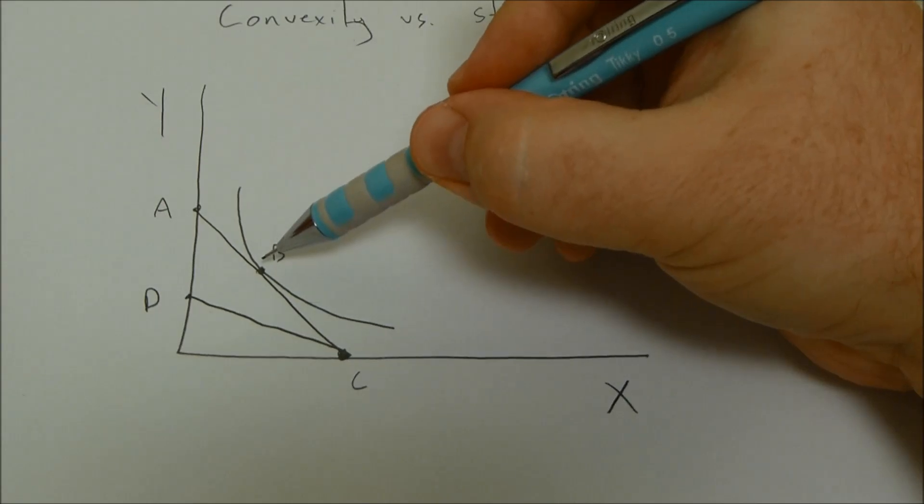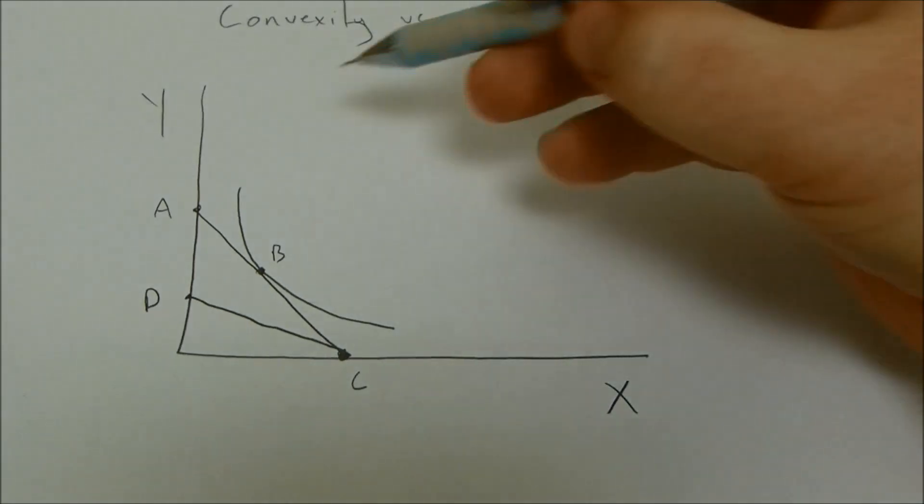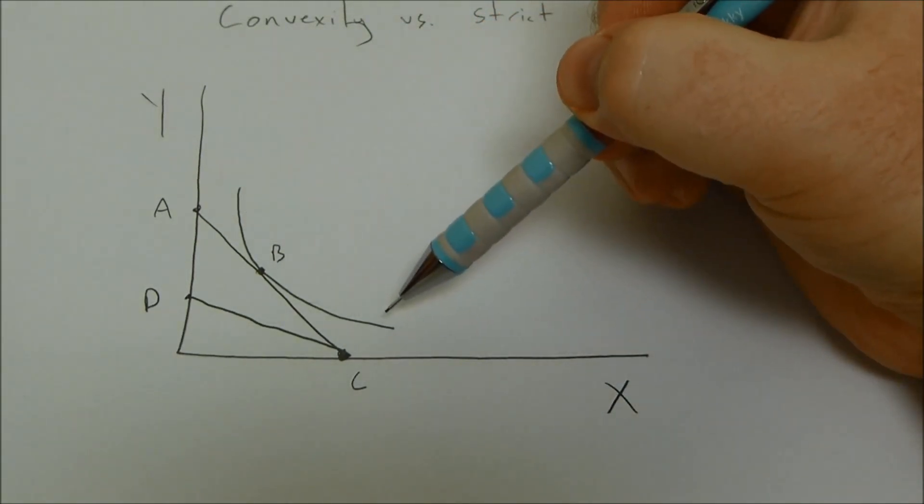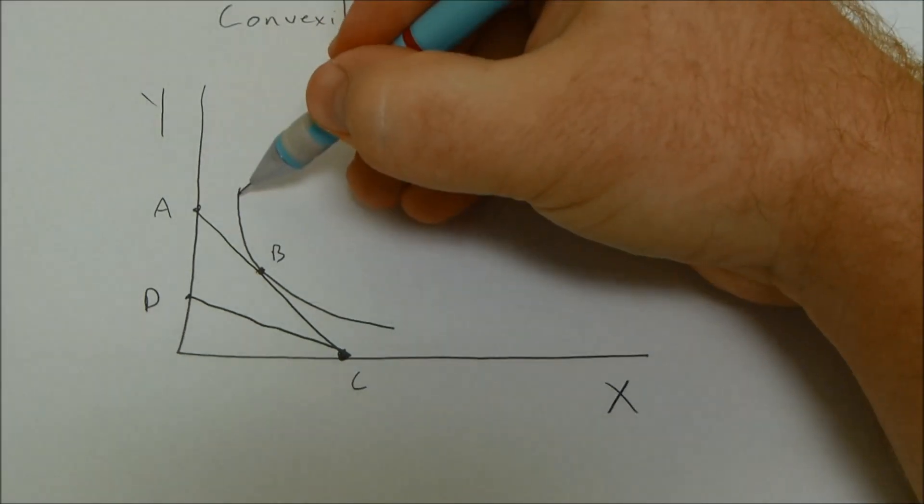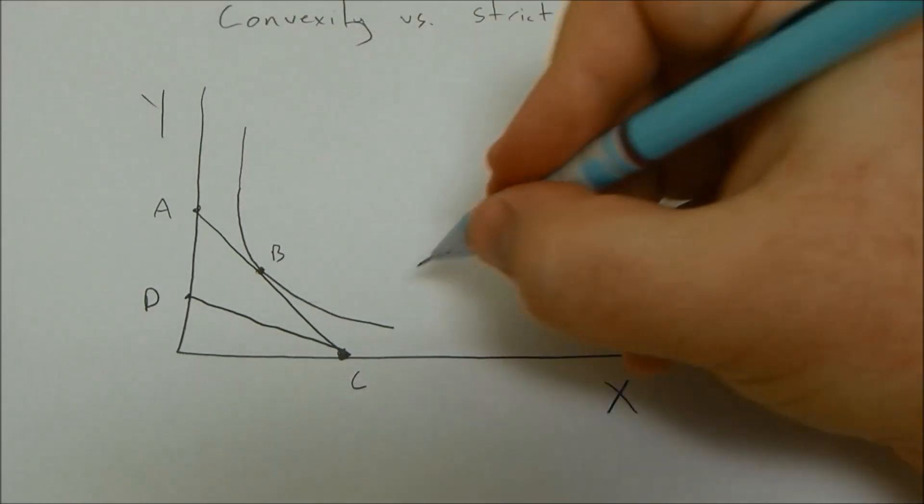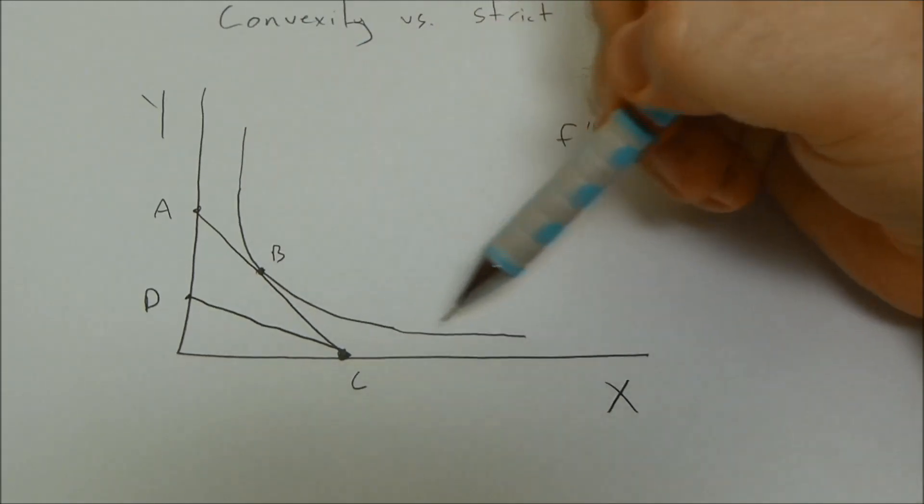An interior solution occurs where we have both of the goods being consumed because we assume that averages are preferred to extreme values of either one good or the other. You can see an example of this with respect to strict convexity because of this bowed-in shape.